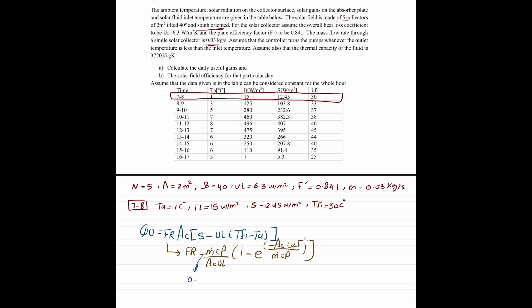M is 0.03, CP is, oh, we didn't write CP here, but it's 3,720. A is 2.